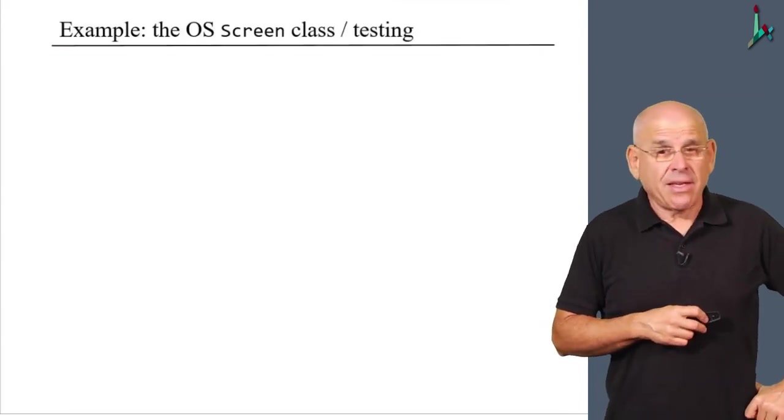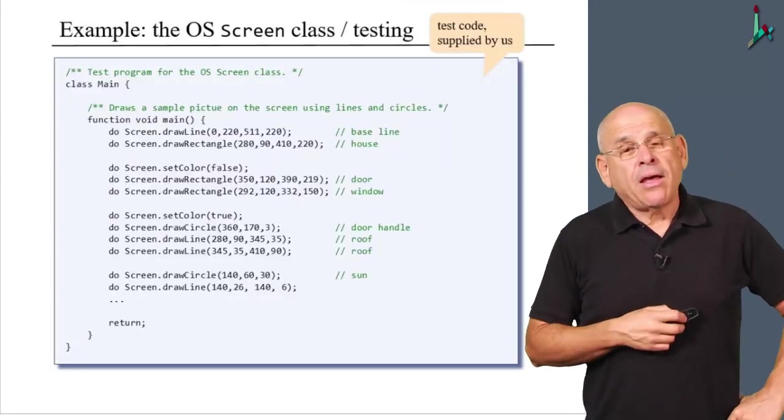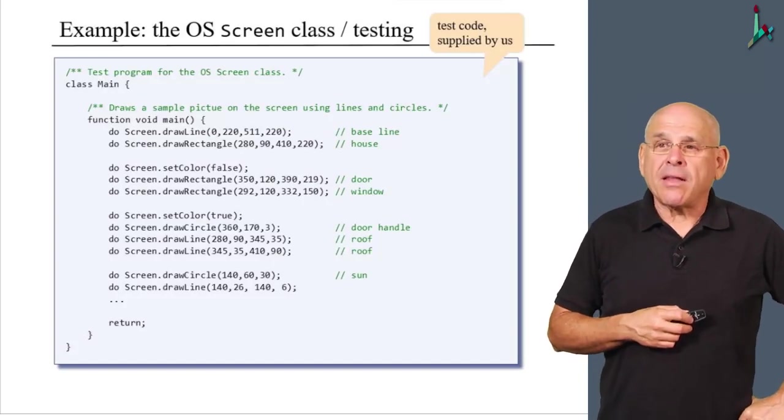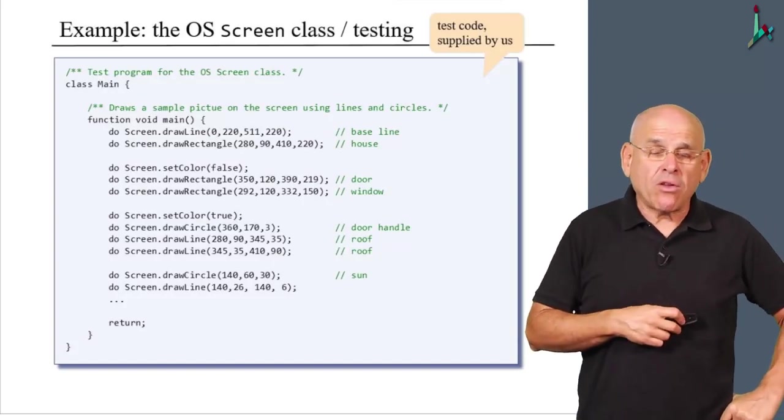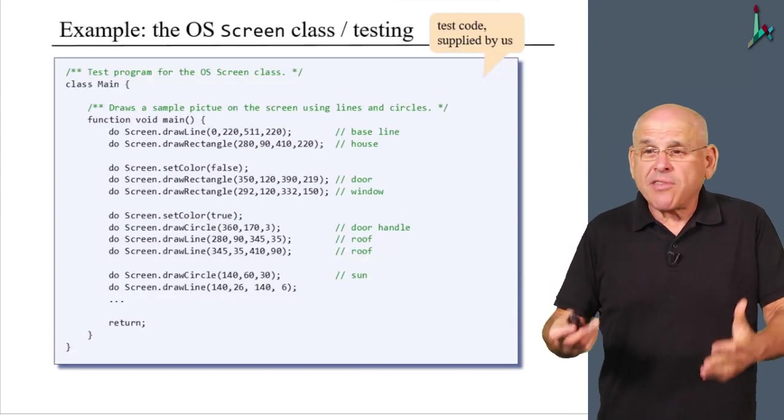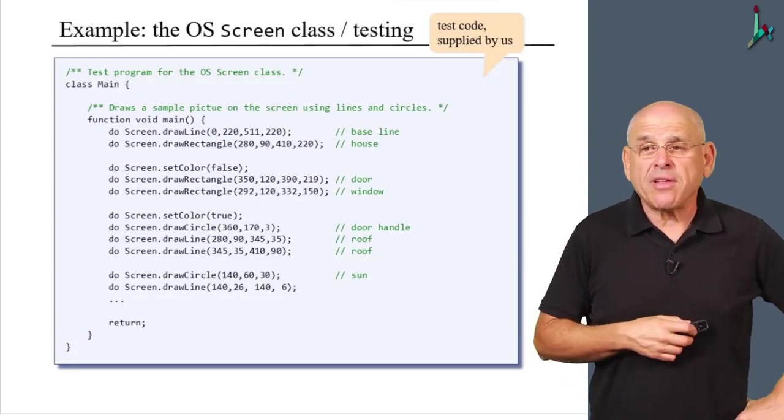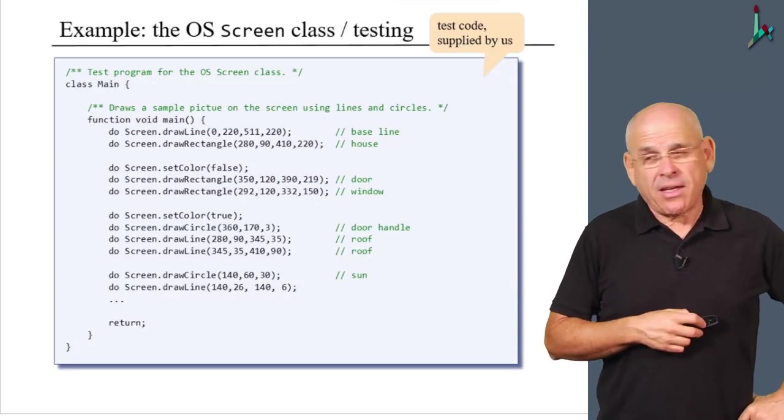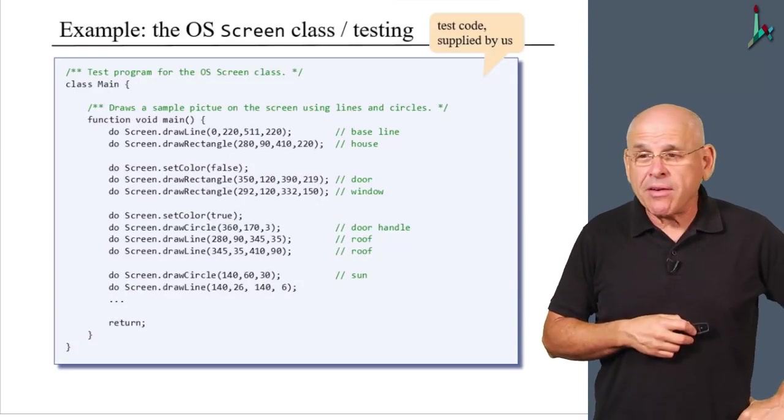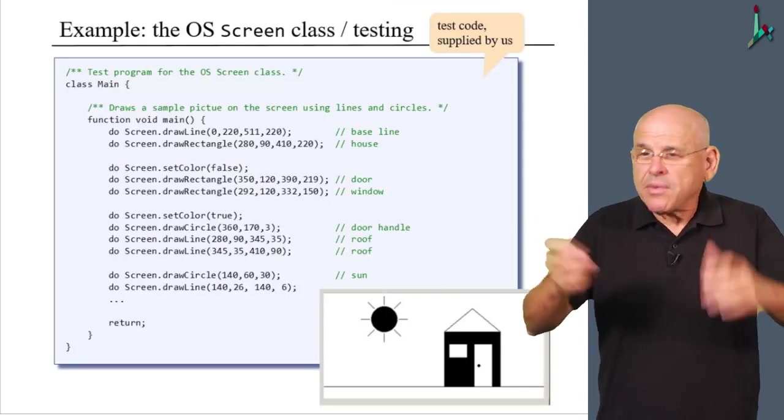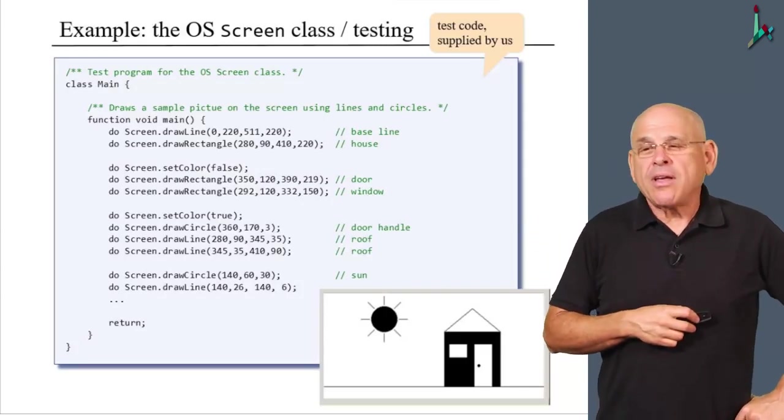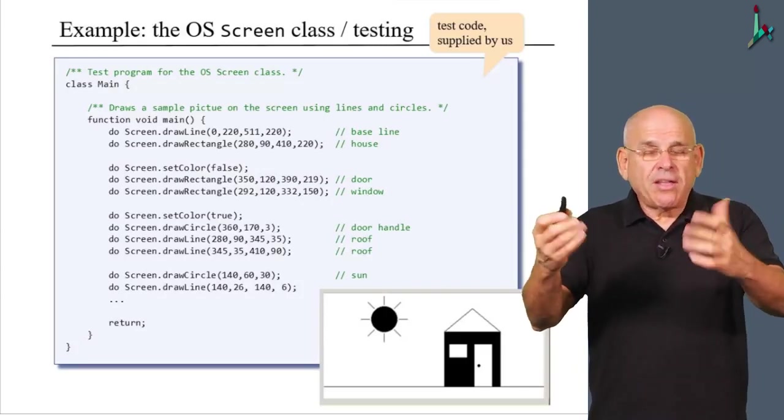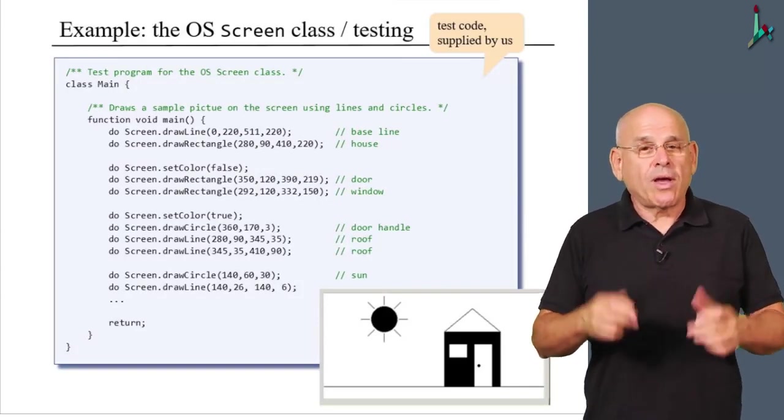What about testing it? Well, we're going to supply a test file, and the name of this test file is going to be main.jack. And as you see, the test file calls all sorts of methods in the screen class. And if you will run this directory on the VM emulator, then here's what you'll get to see: some simple picture, which is designed to demonstrate that your screen class is well behaving.